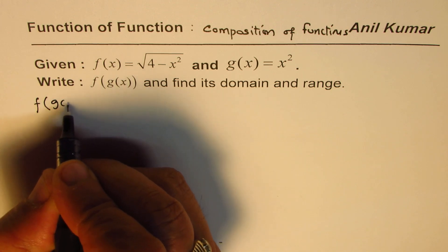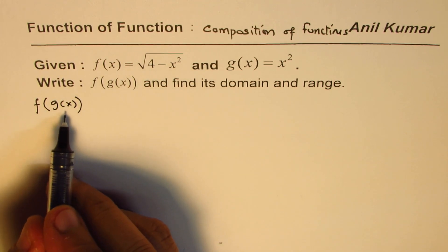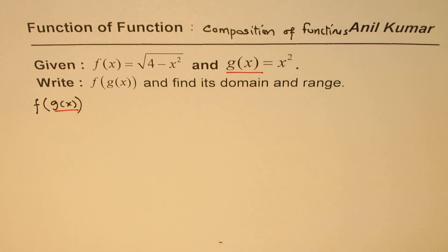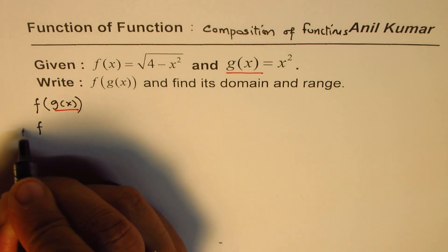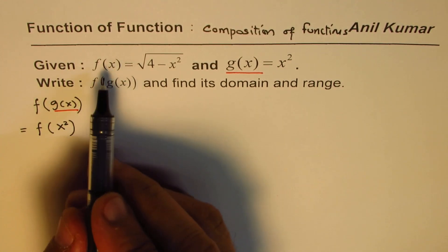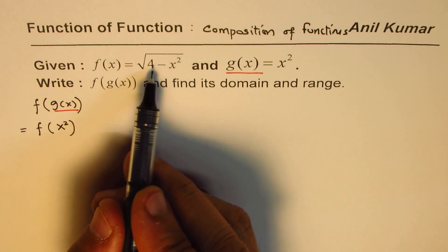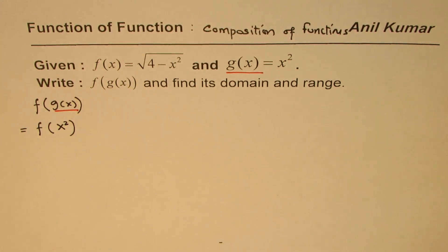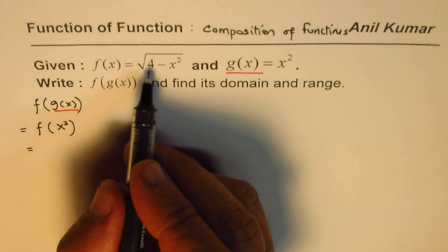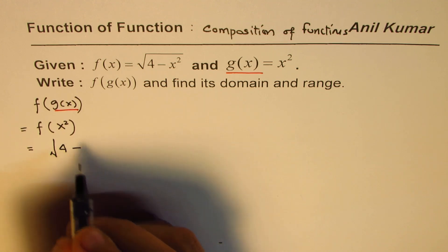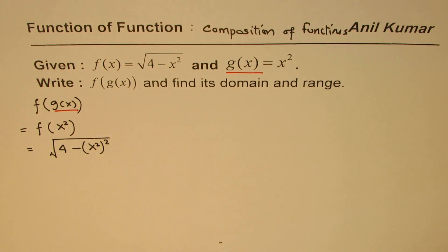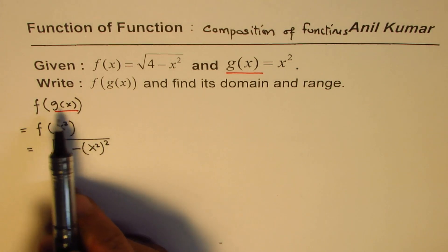To find f(g(x)), we start from the inside function, which is g(x). We replace g(x) with x squared. Now f(x) is square root of 4 minus x squared, so we replace x with x squared to get f(g(x)) equals square root of 4 minus x squared, whole squared. That is the composition f(g(x)).